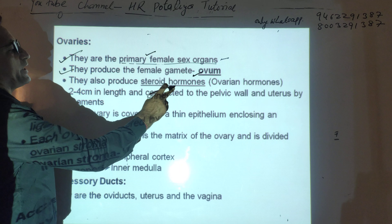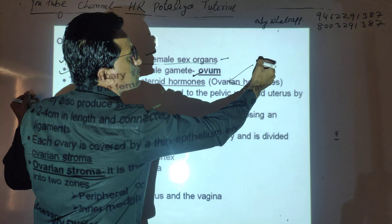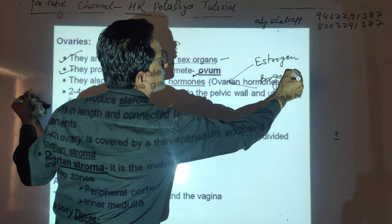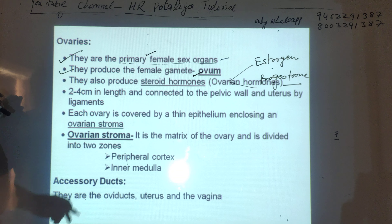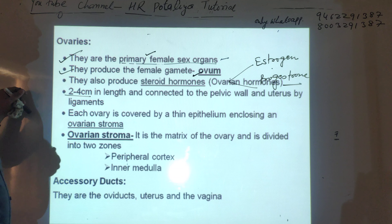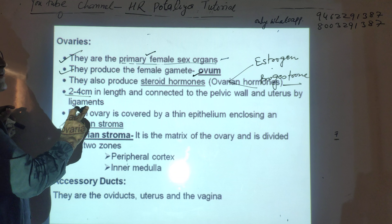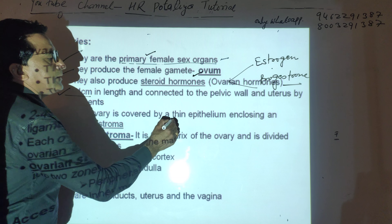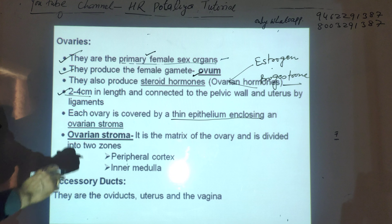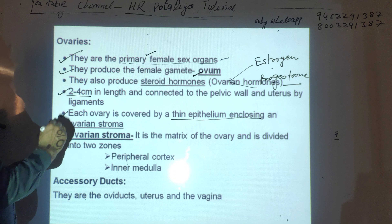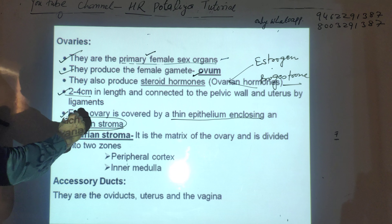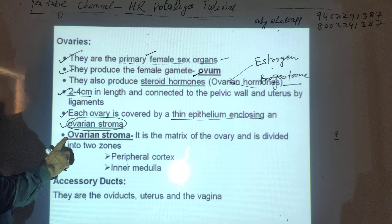The ovary produces the female gamete — the ovum, which is an unfertilized egg — and also produces steroid hormones. Two ovarian hormones are secreted: estrogen and progesterone. The ovary is two to four centimeters in length and is connected to the pelvic wall and uterus by ligaments. Each ovary is covered by a thin epithelium enclosing the ovarian stroma.